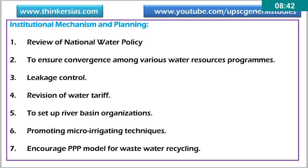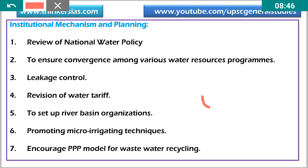Promoting micro irrigation techniques like drip and sprinkler irrigation is also key — these use 40 to 50 percent less water compared to flood irrigation. Drip irrigation has nearly 100 percent efficiency, and you can use up to 70 percent less water. Other techniques include mist irrigation and subsurface irrigation. Encouraging public-private partnership models for wastewater recycling is also important.